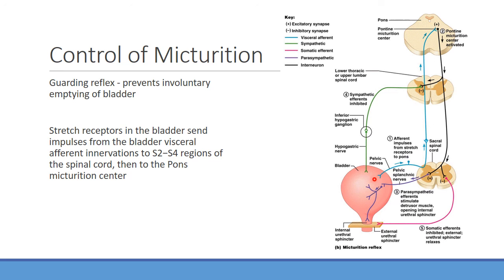The parasympathetic fibers are even more important — they release acetylcholine, which promotes urination. So the parasympathetic system mainly drives urine release from the bladder. There are also motor fibers responsible for constriction of the external urethral sphincter. The internal sphincter is under involuntary control. The external sphincter is controlled by the pudendal nerves, which allow us to consciously control it. There are also stretch receptors in the bladder that send impulses via sacral afferents up to the pontine micturition center.